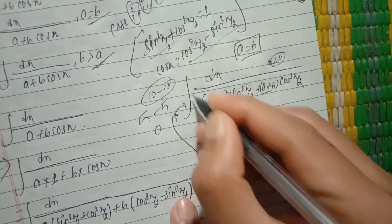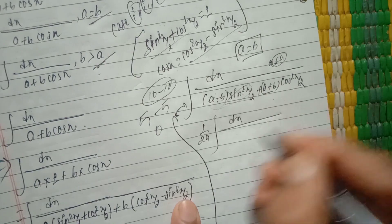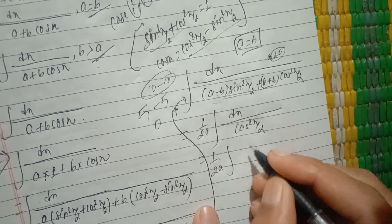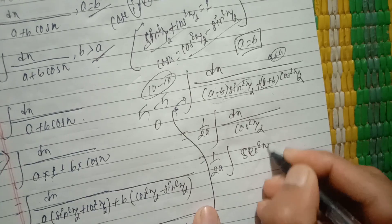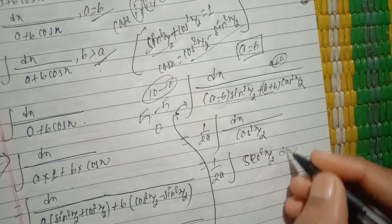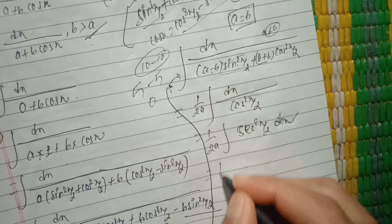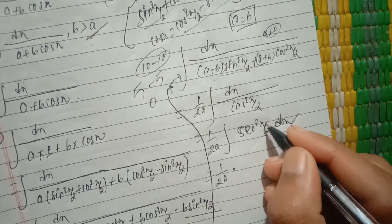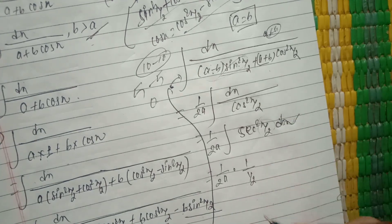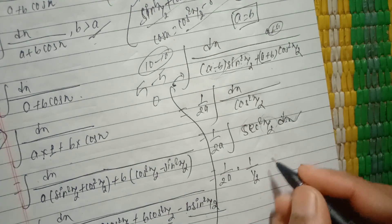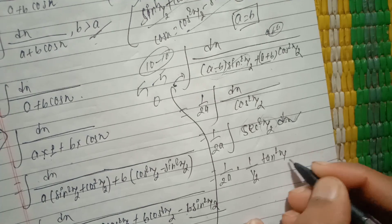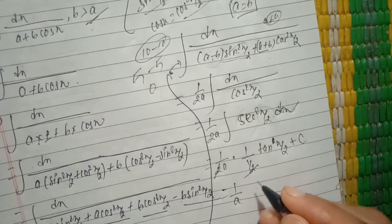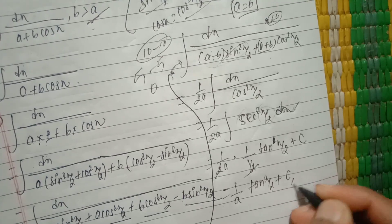Dividing numerator and denominator by cos square x by 2, we get sec square x by 2 dx divided by (a minus b)·tan square x by 2 plus (a plus b). The integration of sec square x by 2 dx leads to tan x by 2, with substitution t = tan(x/2), giving answer: (1/a)·tan inverse (tan x by 2) plus c.